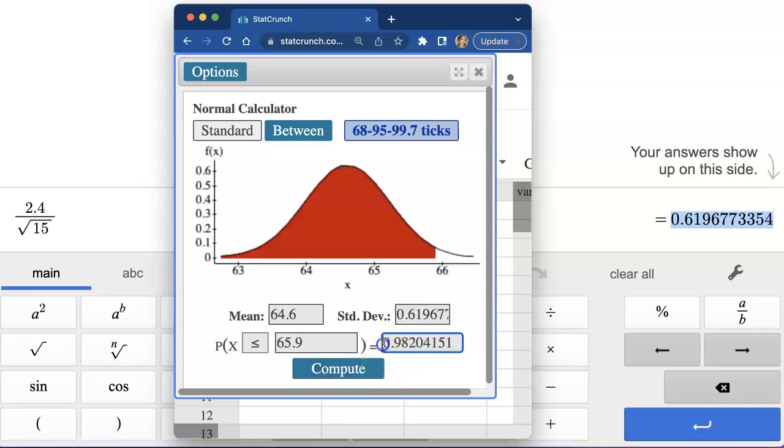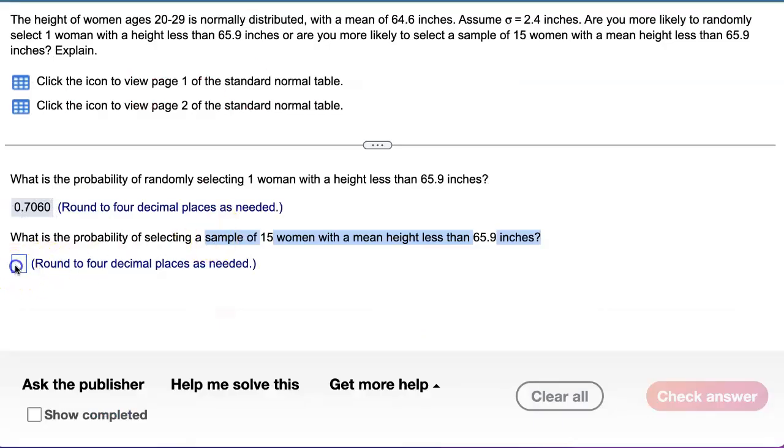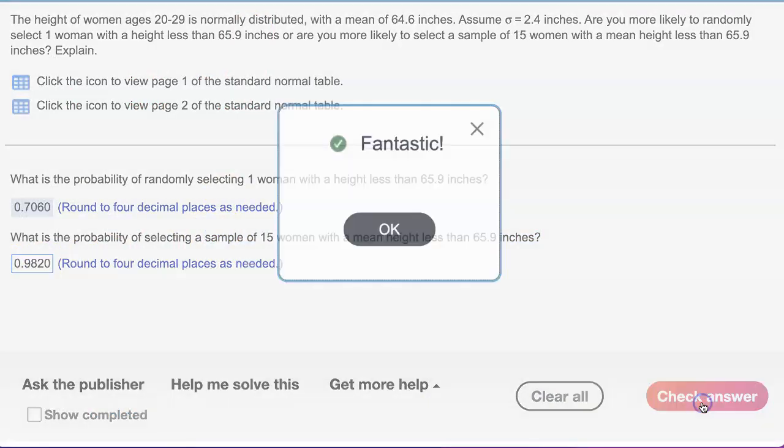Here is the probability. There is about 98% chance that the sample average will come out to be shorter than 65.9 inches. Wow. That's much, much higher than what we had for that previous one.